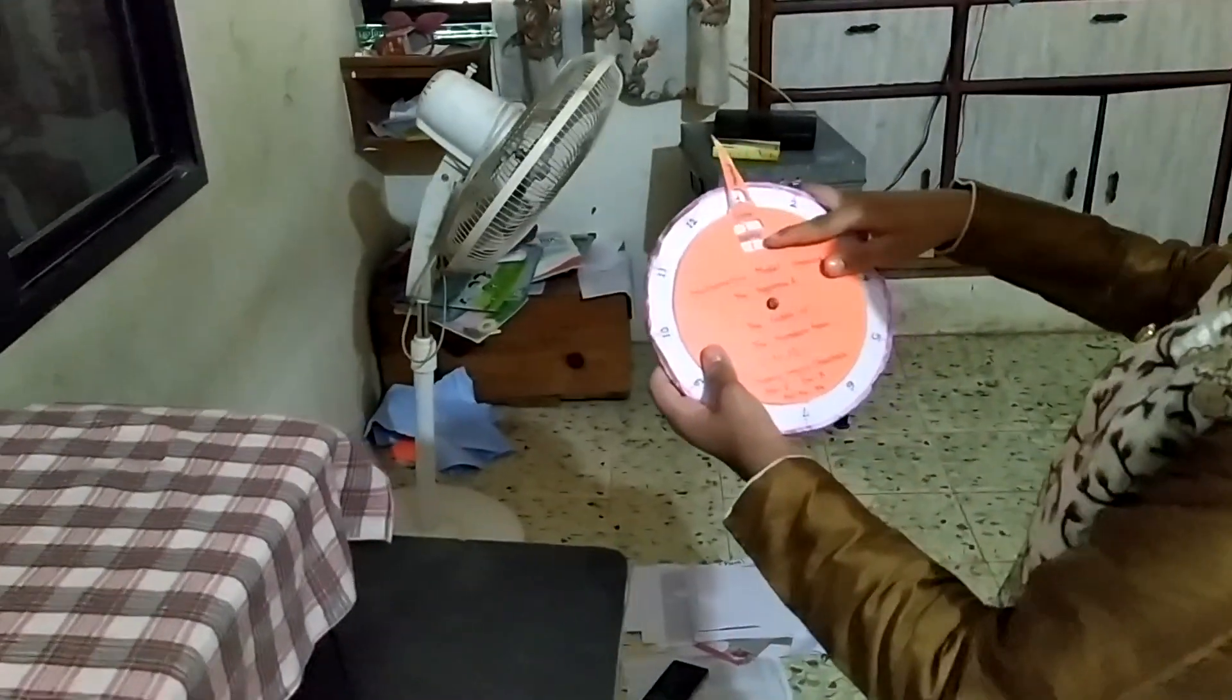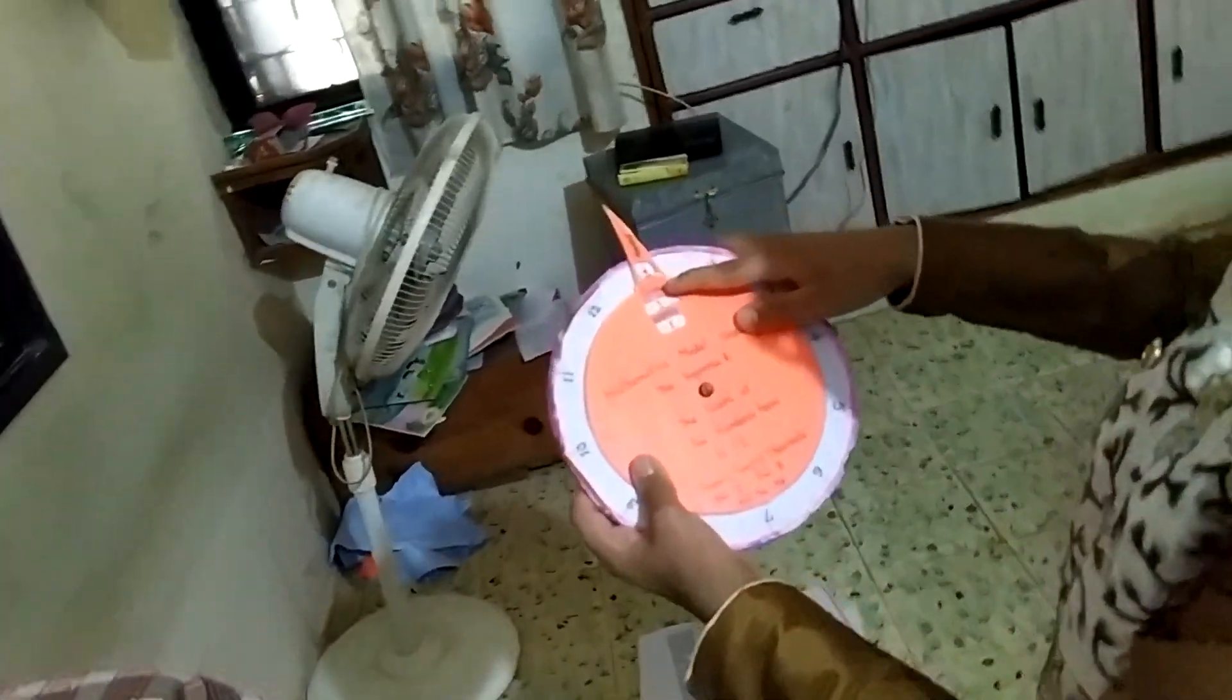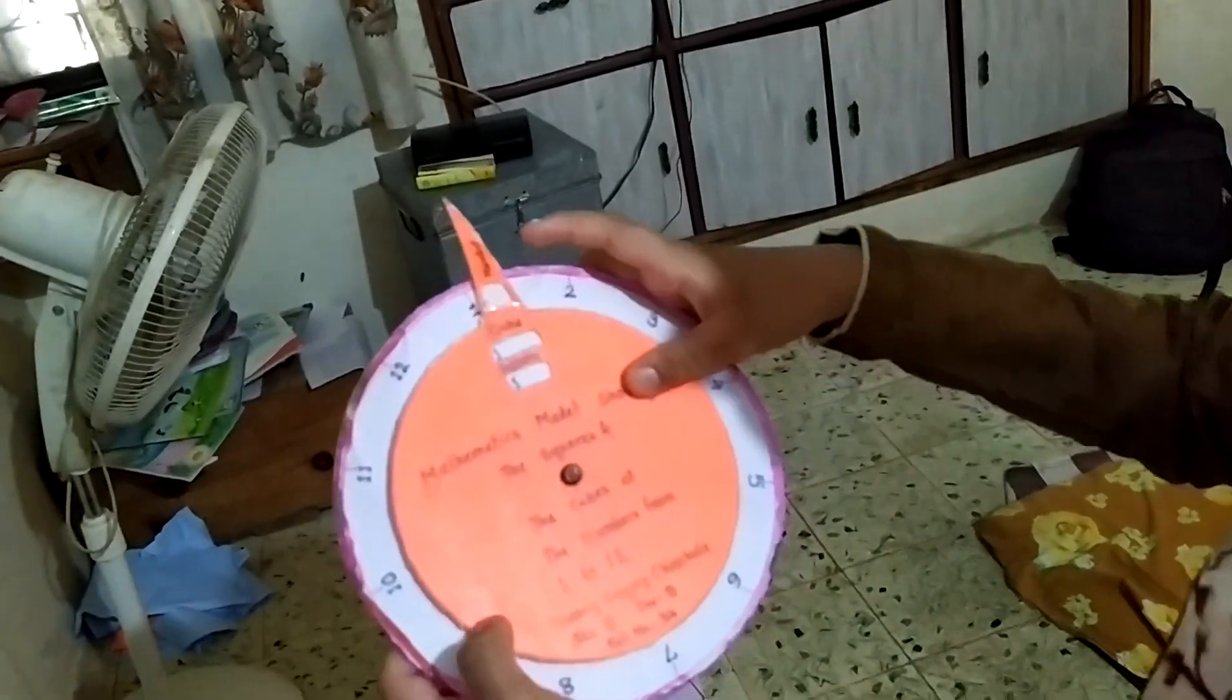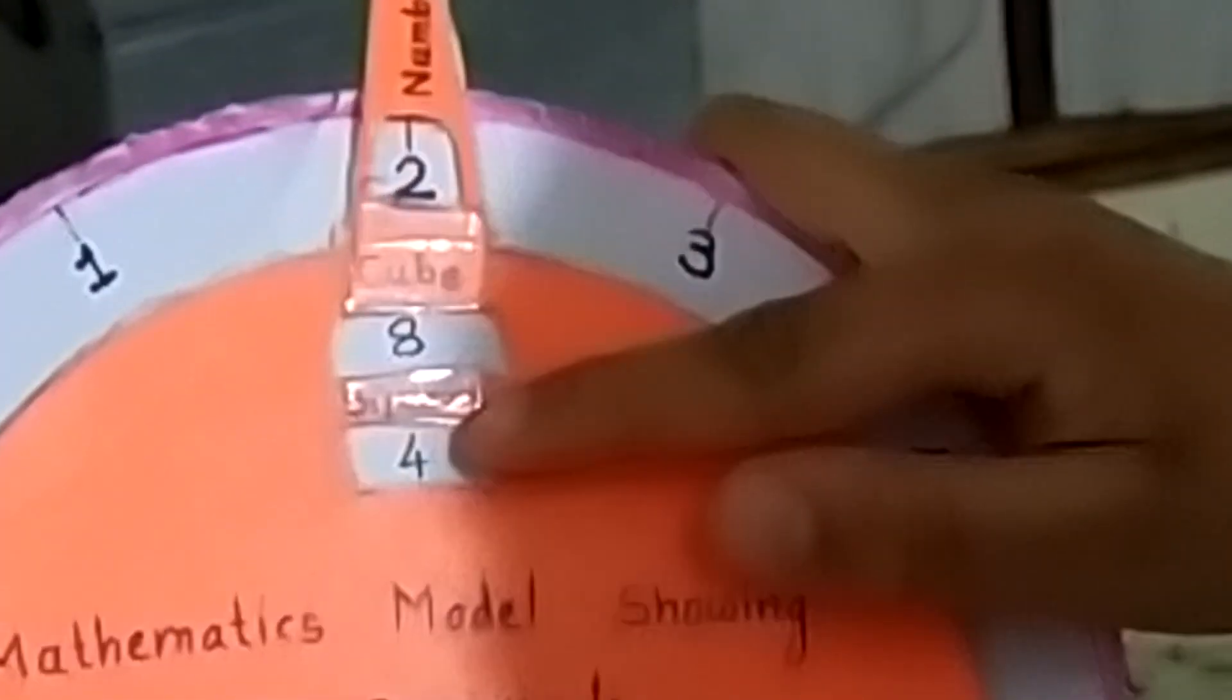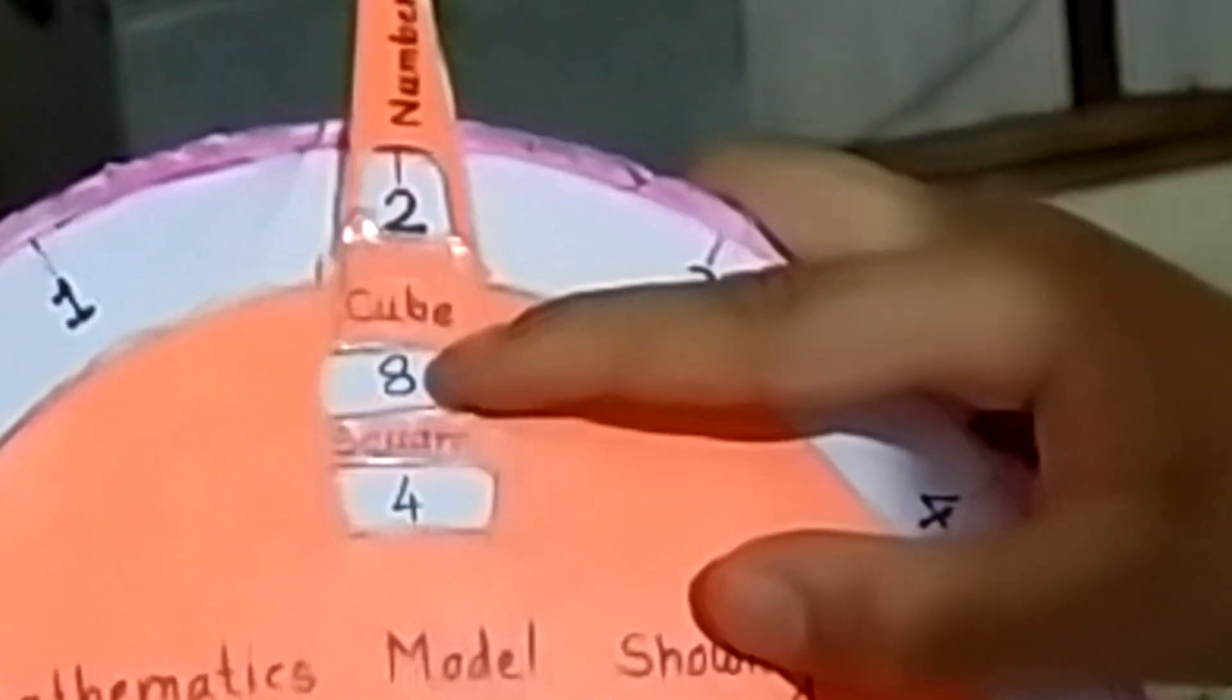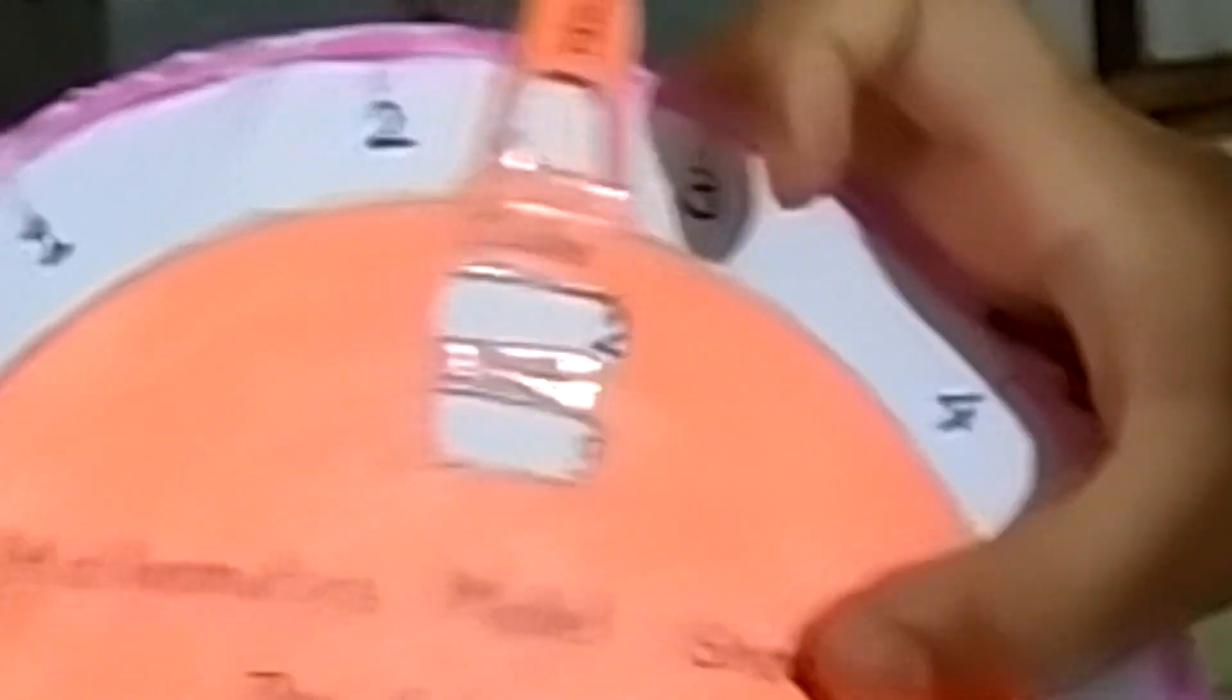1, 1's square is 1 and 1's cube is also 1. Number 2, 2's square is 4 and cube is 8.